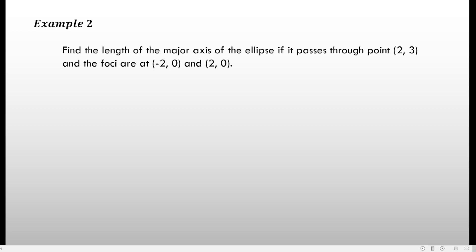Example number 2: Find the length of the major axis of the ellipse if it passes through (0, 3) and the foci are at negative 2, 0 and 2, 0. Notice we are given a point through which the ellipse passes, and f1 and f2 are the two foci. The goal is to get the value of 2a, which is the length of the major axis. Recall the definition of the ellipse: pf1 plus pf2 equals 2a. If we get the distance from the point to each focus and sum them, we get 2a.